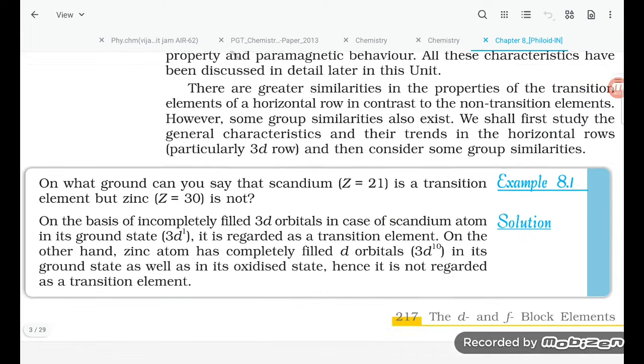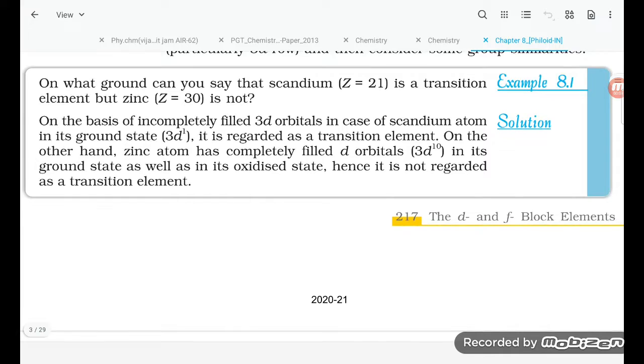Hello students, let's try to understand one problem. What is the problem here? They are asking on what ground can you say that scandium (Z=21) is a transition metal but zinc (Z=30) is not?